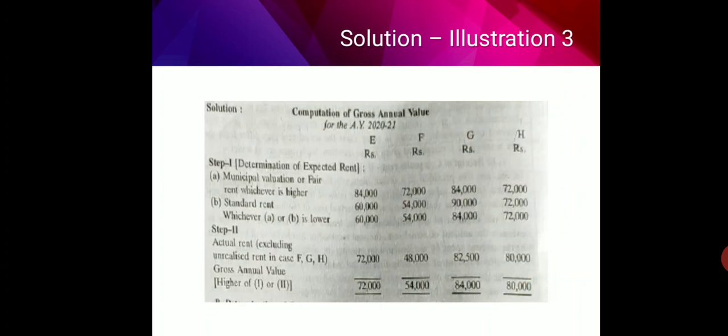For property F: municipal value or fair rent whichever is higher is 72,000. Standard rent is 54,000, so the lower of 72,000 and 54,000 is 54,000 for step 1. Step 2: actual rent is 48,000. Out of step 1 and step 2, the higher value is 54,000, so gross annual value for property F is 54,000. Similarly, gross annual value for properties G and H can be determined.